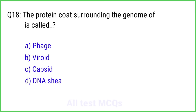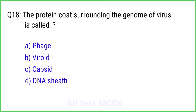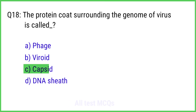Question No. 18. The protein coat surrounding the genome of a virus is called? The right answer is Option C: Capsid.